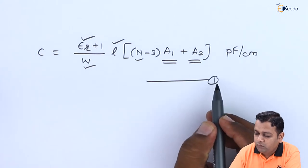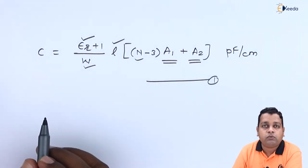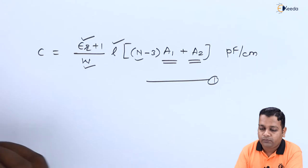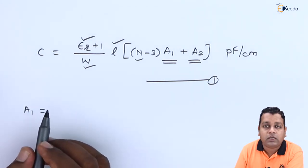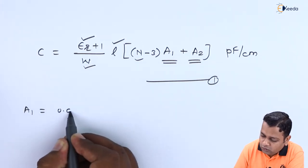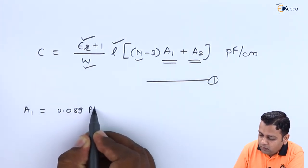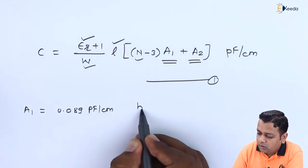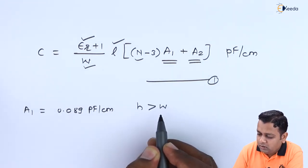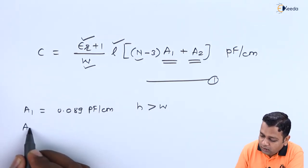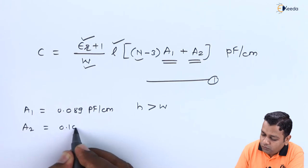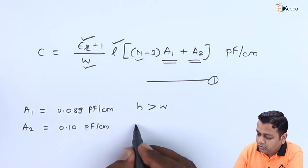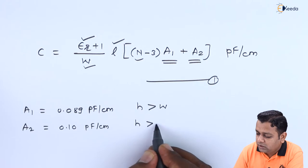So let us denote this equation by equation number 1. And recall from the topic where we have learned the thin film formation for the capacitive type here. There it was capital A1 given for the interdigitated type is equal to 0.089 picofarad per centimeter. The contribution from the interior finger for the case is small h greater than w. Whereas we had capital A2 to the value 0.10 picofarad per centimeter. The contribution from the two of external fingers again for the condition h is greater than w.